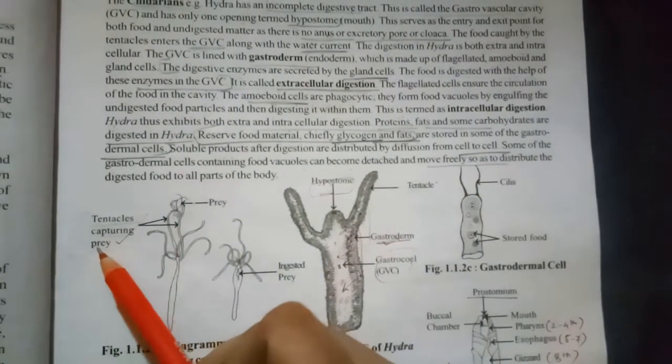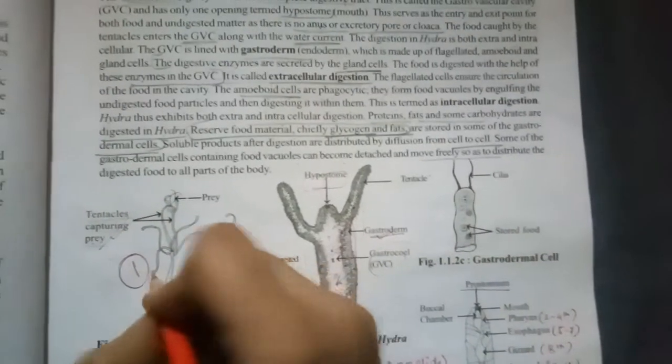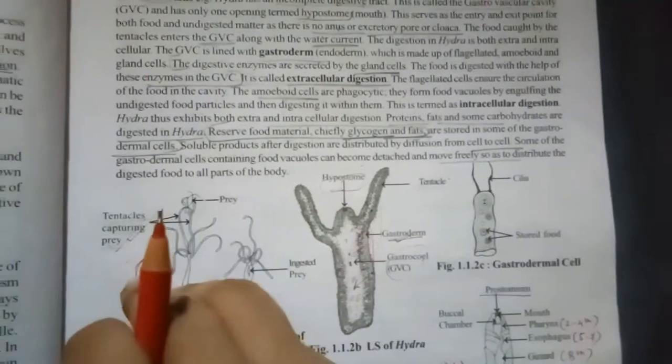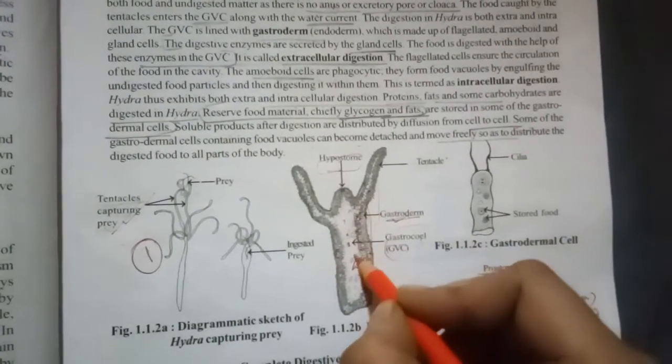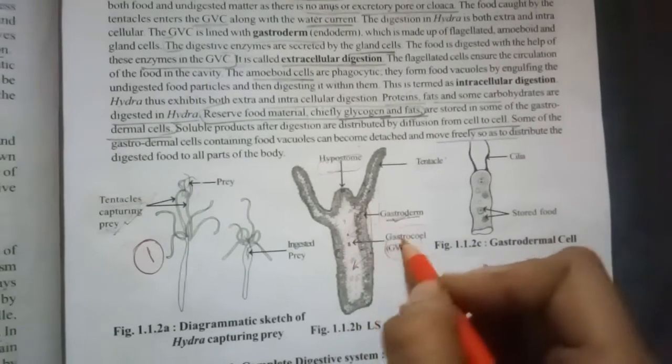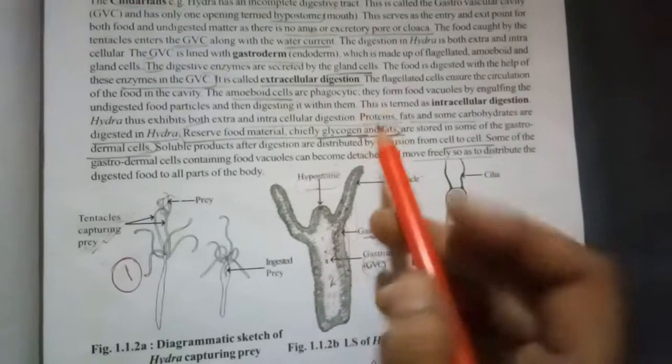And with the help of the tentacle, the capturing will occur initially. In step one, the capturing with the help of tentacle will occur. Then through the hypostome it will go inside and the cells of the gastroderm will digest it.